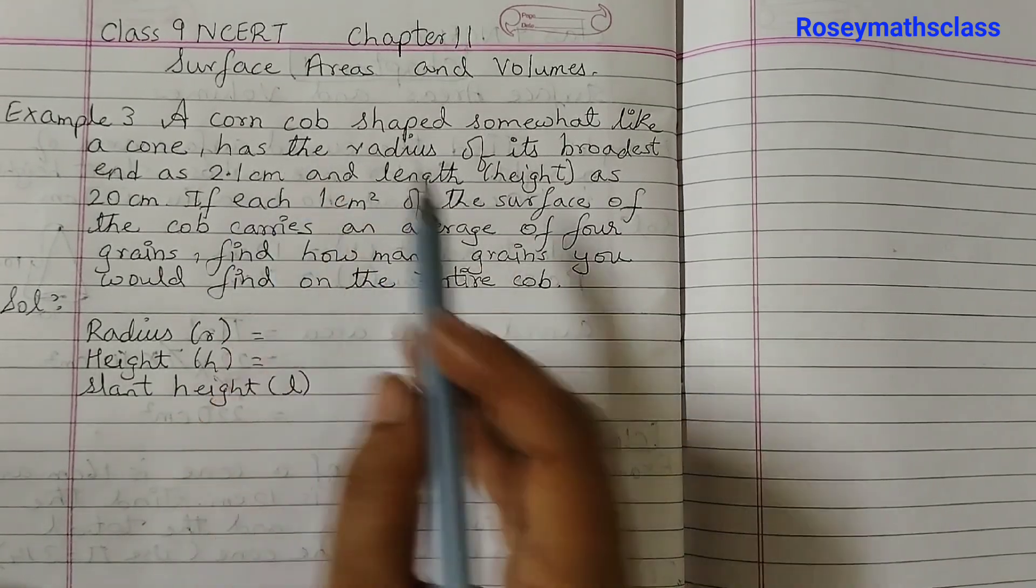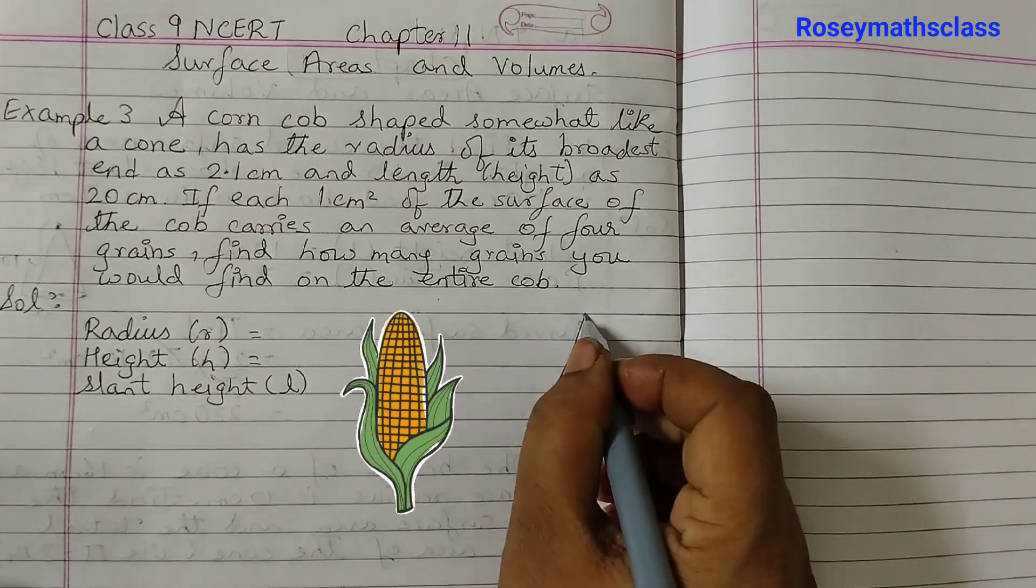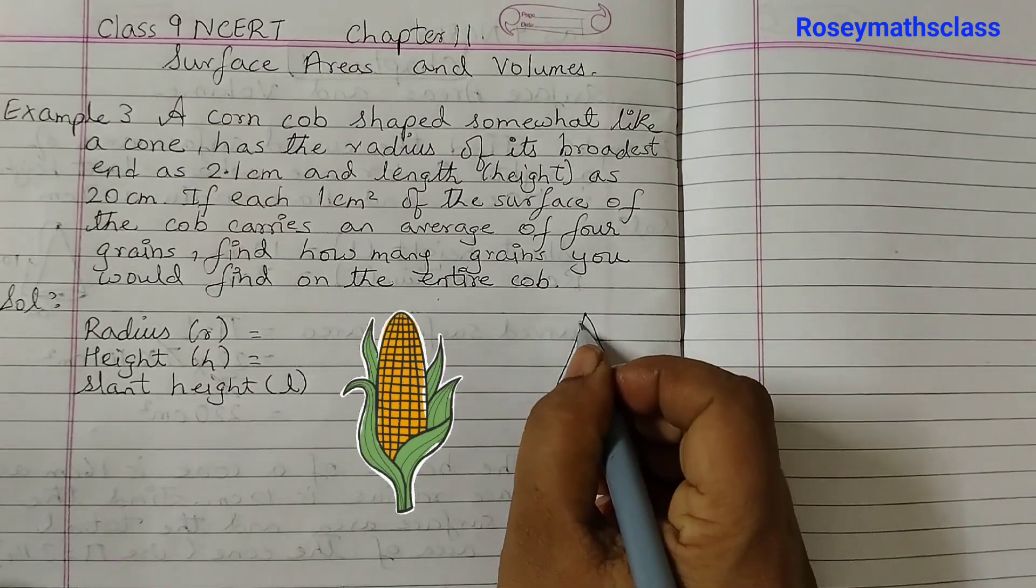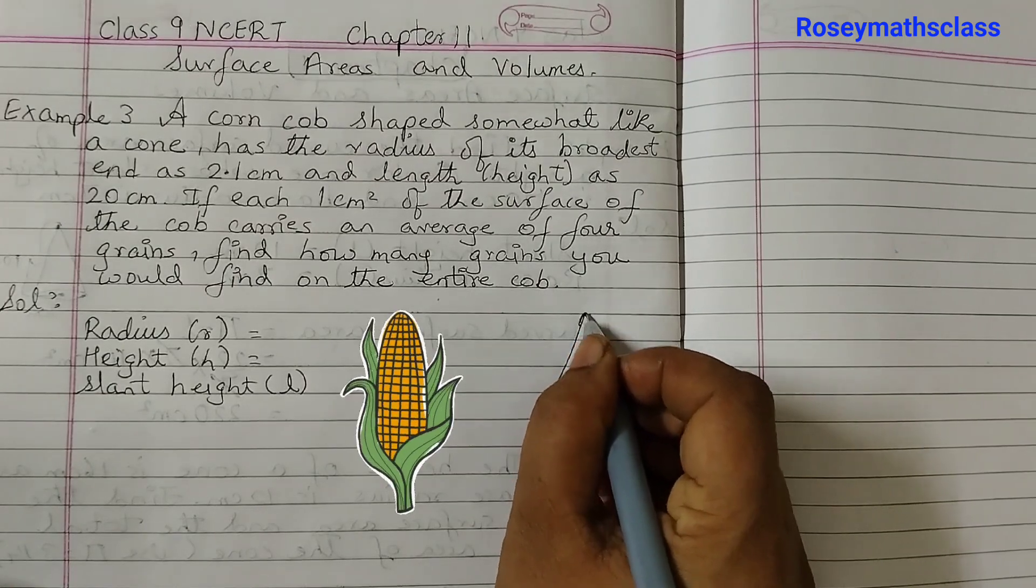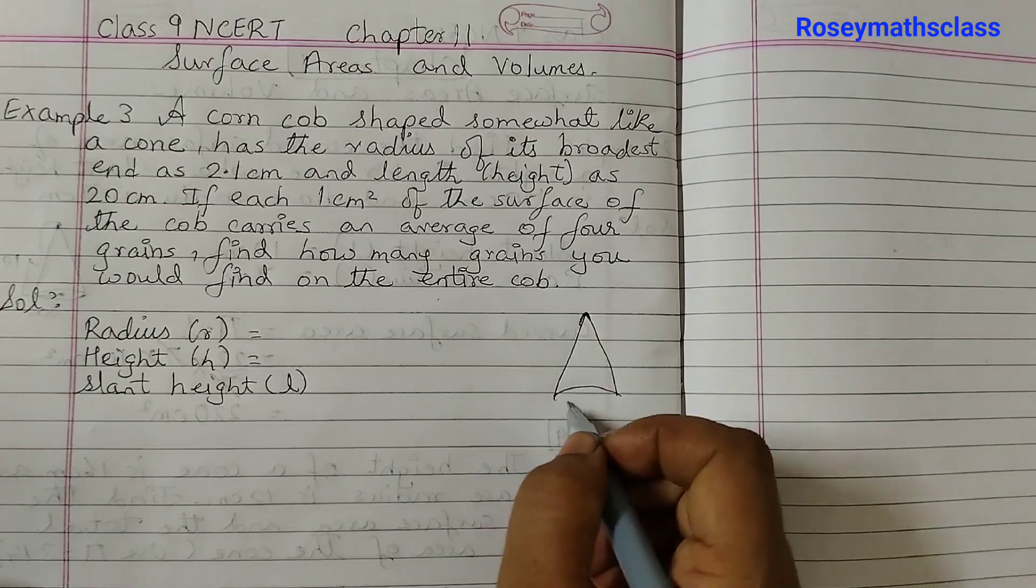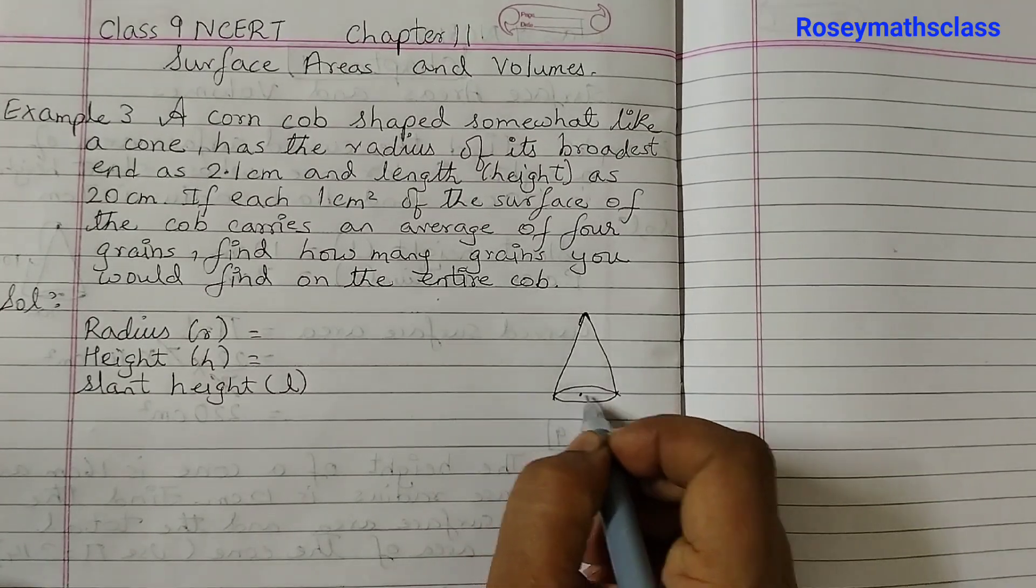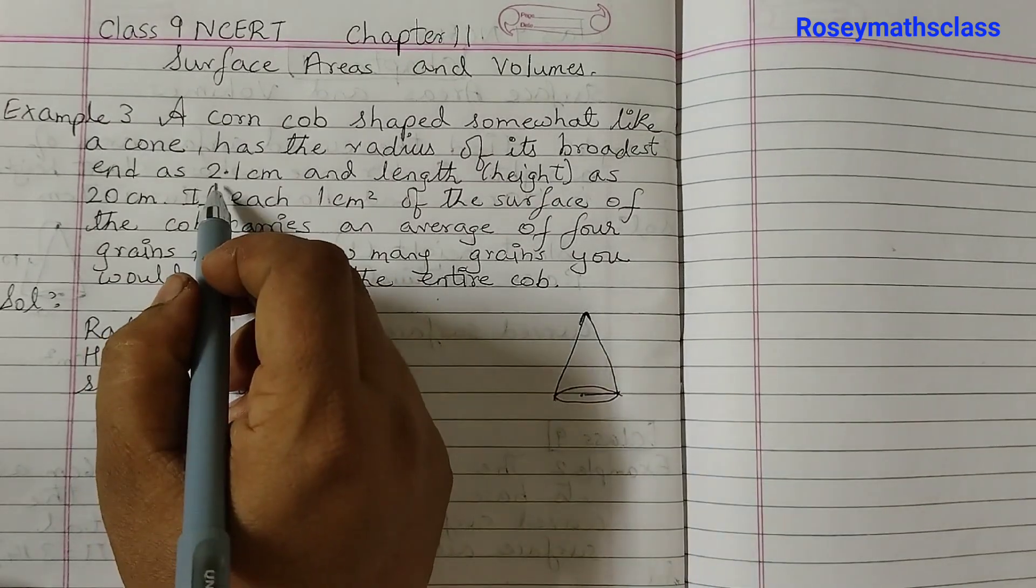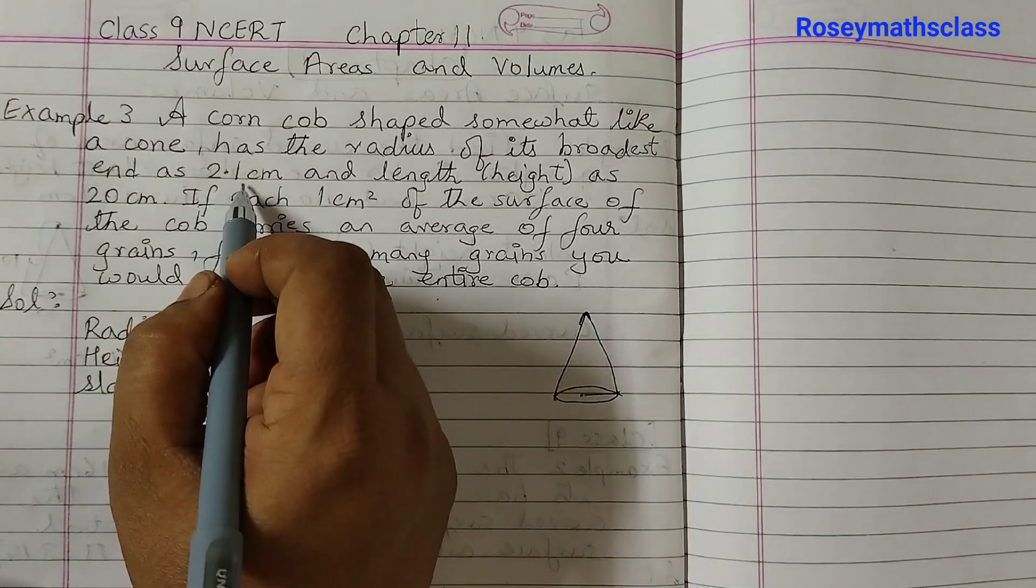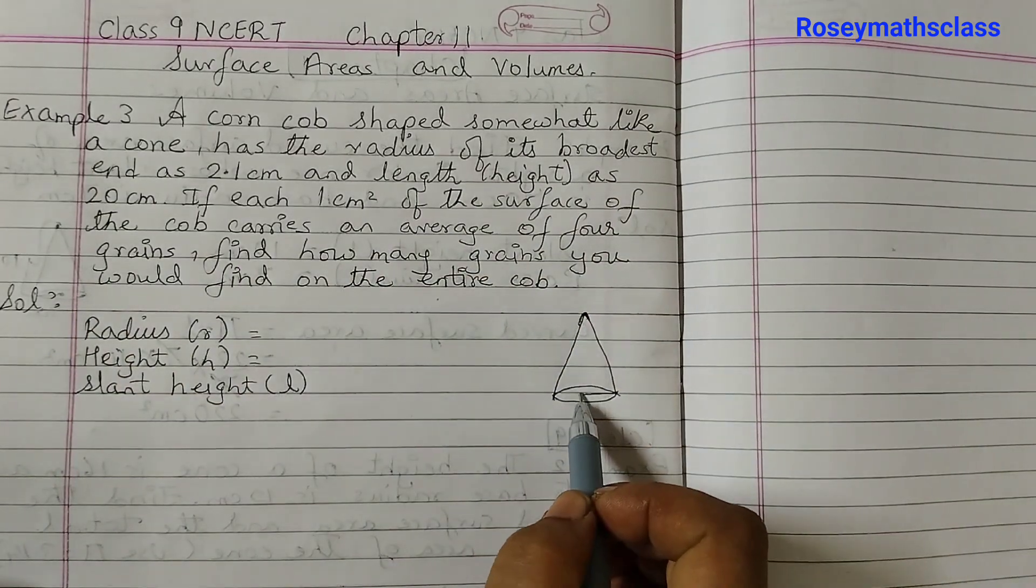So a corn cob is given which is in the shape of a cone. Let's draw a rough sketch. Let's say this is our cone. This is just a rough sketch. And let's say this is the base of the cone. The radius is given as 2.1 cm of the broadest end. So this is the narrowest and this is the broadest end.